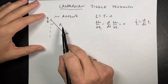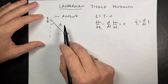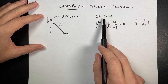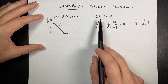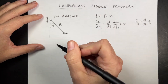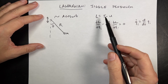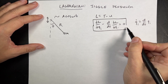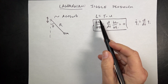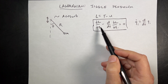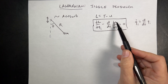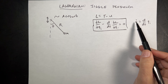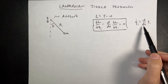Let's model this in Python. But to do that, we need to find a differential equation of motion. We're going to define the Lagrangian as kinetic energy minus potential energy. In this case, we only have one degree of freedom — the angle theta. Then we can use the Euler-Lagrange equation: the partial of L with respect to qi minus the time derivative of the partial of L with respect to qi-dot equals zero.